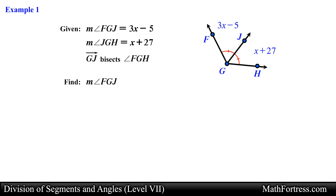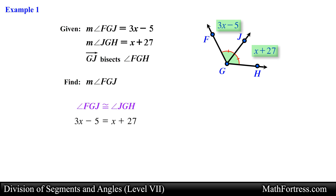Now that we have the given information labeled in the diagram, let's go ahead and plan how we are going to solve for x. We know that angle FGJ and angle JGH are congruent, and we also have an algebraic expression representing the measurement of both of these angles in terms of x. So let's set both of these algebraic expressions equal to each other.